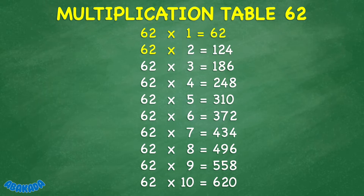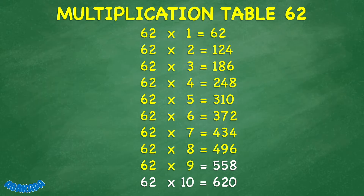62 times 2 equals 124. 62 times 3 equals 186. 62 times 4 equals 248. 62 times 5 equals 310. 62 times 6 equals 372. 62 times 7 equals 434. 62 times 8 equals 496. 62 times 9 equals 558.